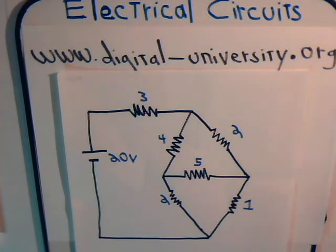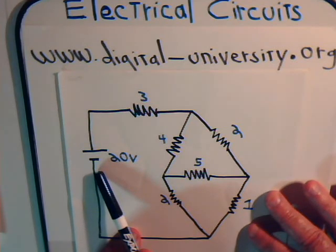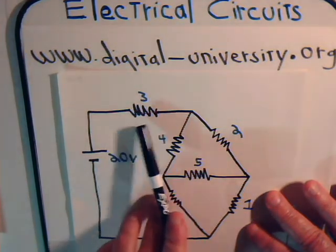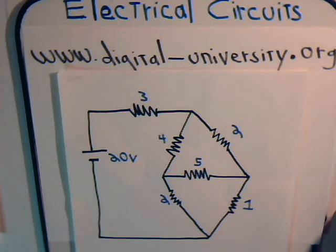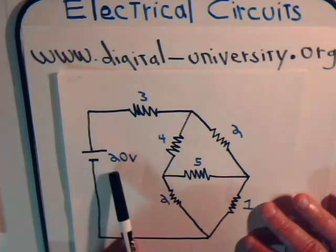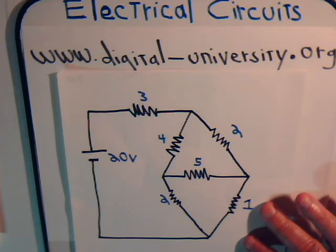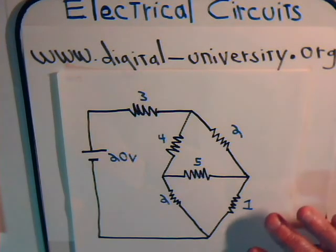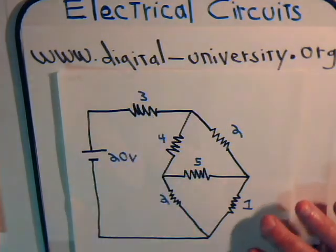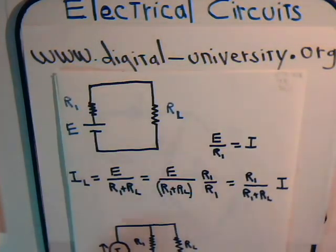The reason this circuit is amenable to nodal analysis is because of this arrangement: we have a voltage source in series with a resistor. As covered in video 22, with that type of arrangement you can replace the voltage source and series resistor with a current source in parallel with that same resistor. The magnitude of the current source is 20 divided by 3, stemming from the source conversion technique in video 22.